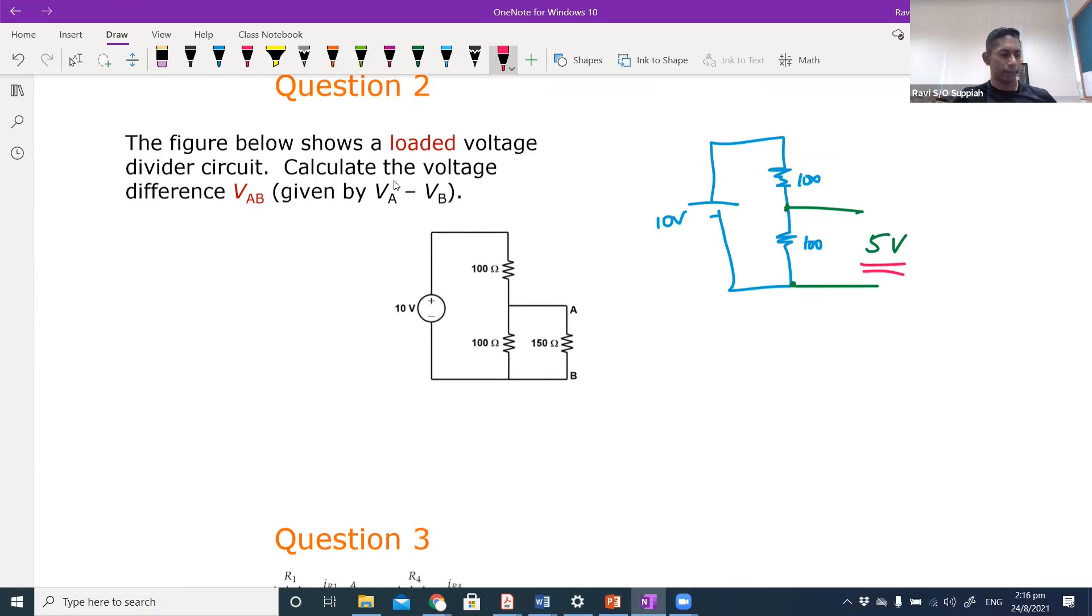If you look at this example, when current flows through here in this node, you will split here and split here, which means that these two are parallel. Always look at current flow to know where it splits, and where it splits those branches are parallel.